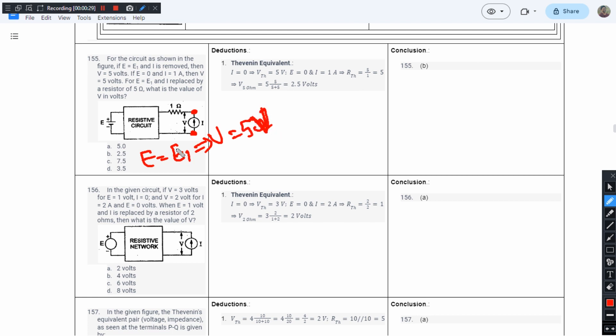The second statement says if E equals 0—I'm talking about a short circuit—and I equals 1 ampere, so E equals 0, that is a short circuit on this side, and the value of I, the current source, equals 1 ampere, and the terminal voltage is equal to 5 volts.